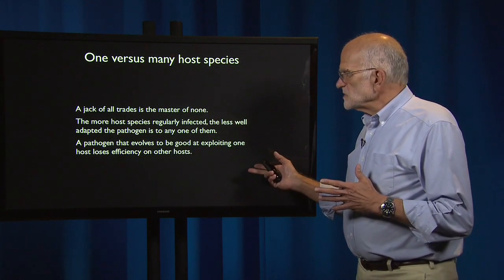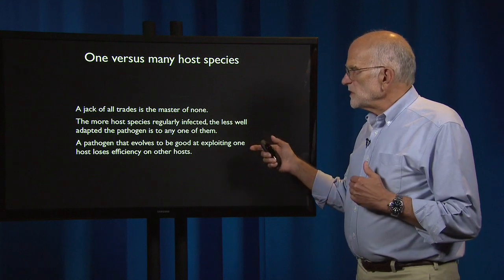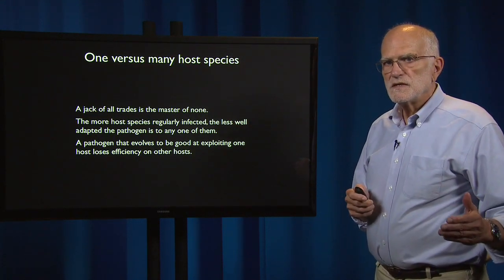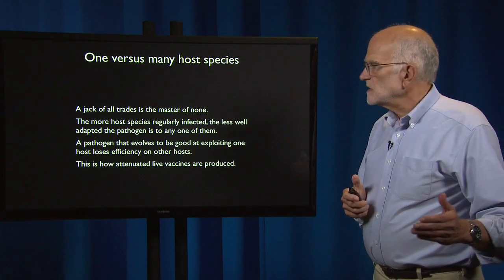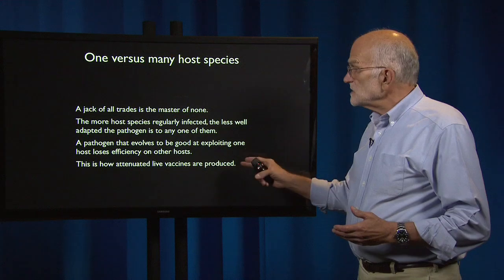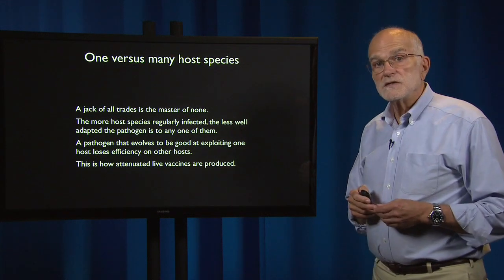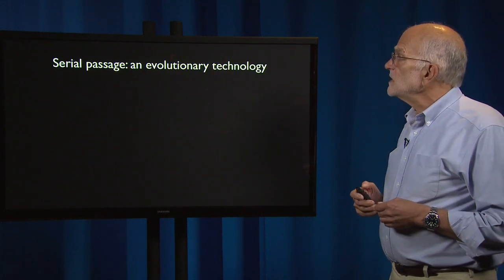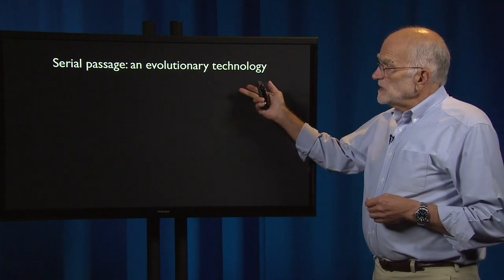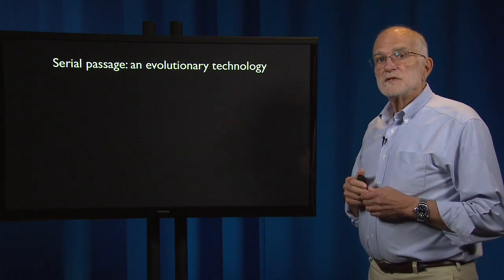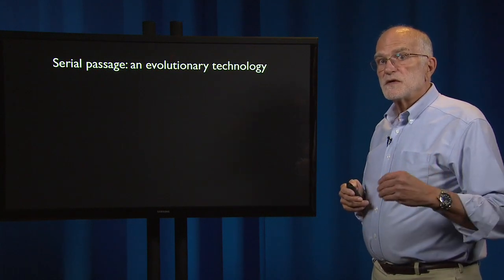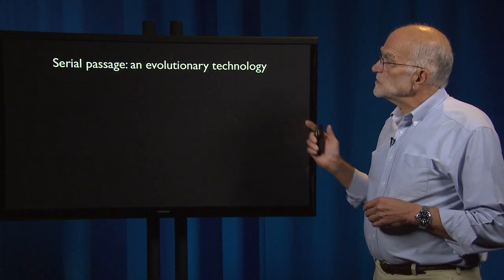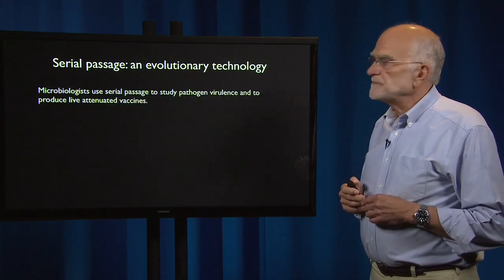A pathogen that evolves to be good at exploiting one host loses efficacy in the other hosts. And that is how attenuated live vaccines are produced. Serial passage, which is the process used in making attenuated live vaccines, is actually an evolutionary technology.